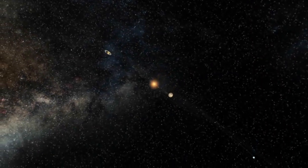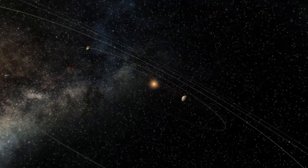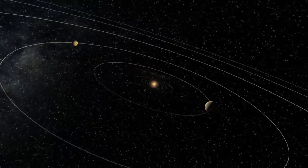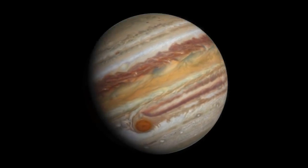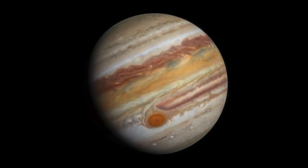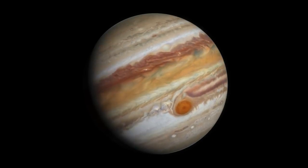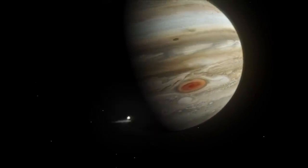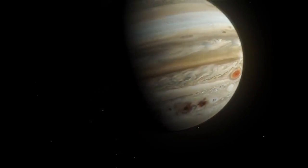Hubble has revolutionized planetary science in a number of ways through its precise observations of our own solar system. Hubble has charted the dynamic activity on Jupiter and its Moon Io. In 1994, it also witnessed a comet crash into the planet's surface.